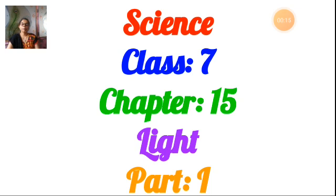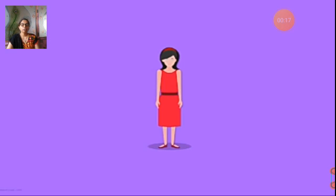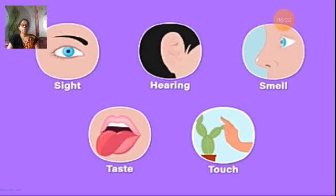How do we humans perceive things around us? We have five sense organs that help us to interact with the world around us: sight, hearing, smell, taste, and touch.